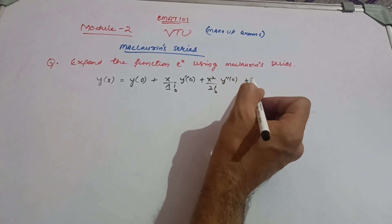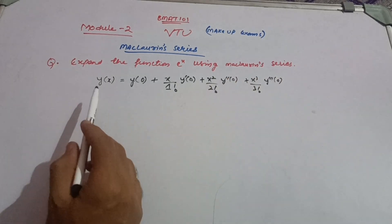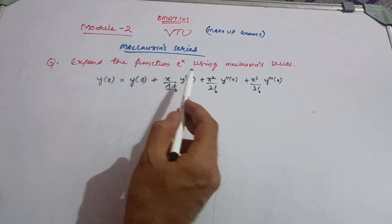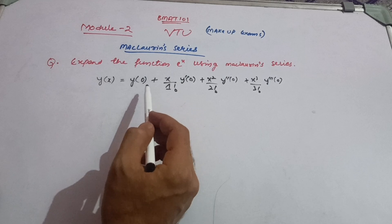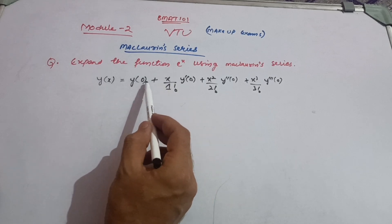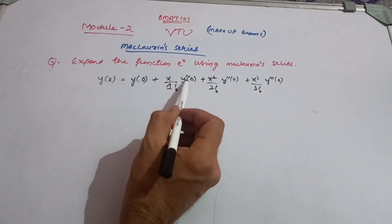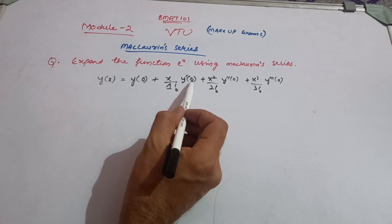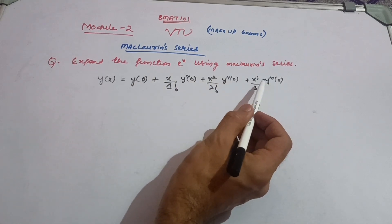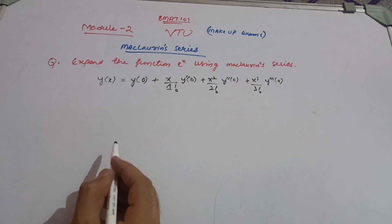The Maclaren series formula is: y(x) = y(0) + x/1! · y'(0) + x²/2! · y''(0) + x³/3! · y'''(0) + ... You give the initial condition by putting x = 0 to get y(0), then differentiate the function and put x = 0 to get y'(0), then differentiate again for y''(0), and so on. It is very easy to remember, my dear friends.